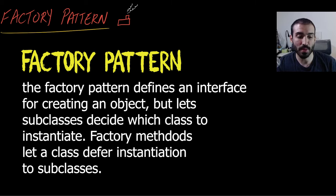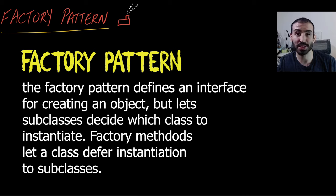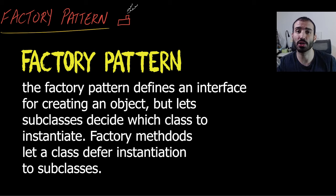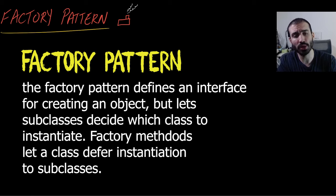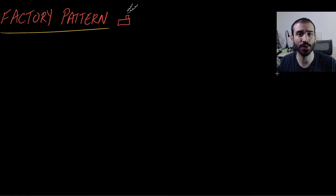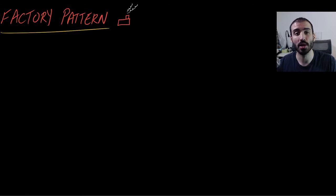The second part — factory methods let a class defer instantiation to subclasses — means you can let subclasses decide which type of object to create. The factory just defines the interface the subclasses follow, but doesn't necessarily know the core logic within those subclasses. This is a pretty crude definition, so now I want to go through a trivial example of what I call the simple factory pattern — the most basic factory you can define while still calling it a factory pattern.